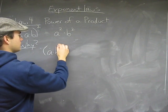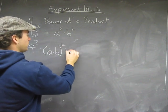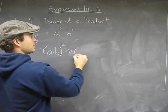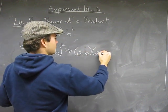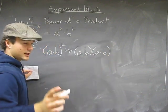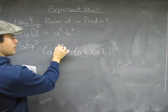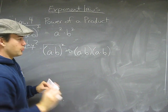A times B squared. Well we know that this is the same as a times b times a times b, because the last law we remember that this exponent applies to the entire bracket set.